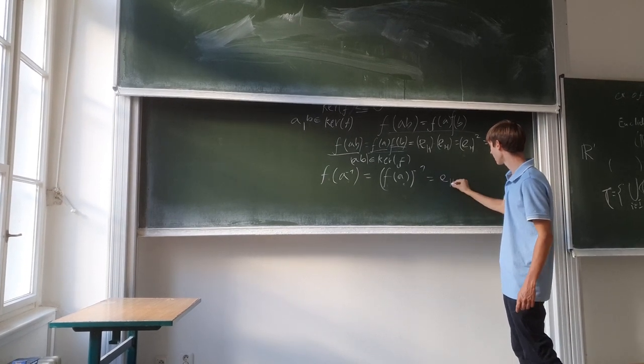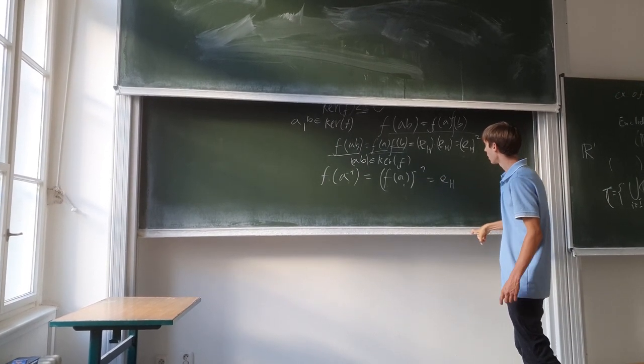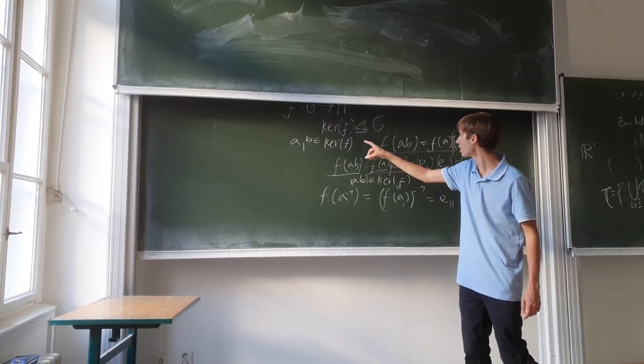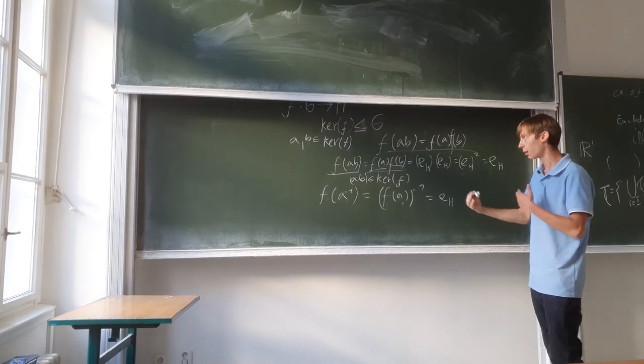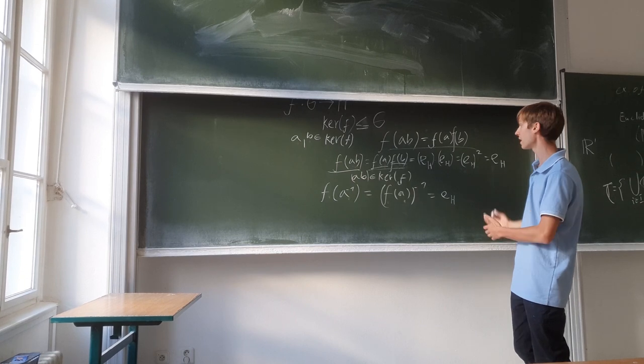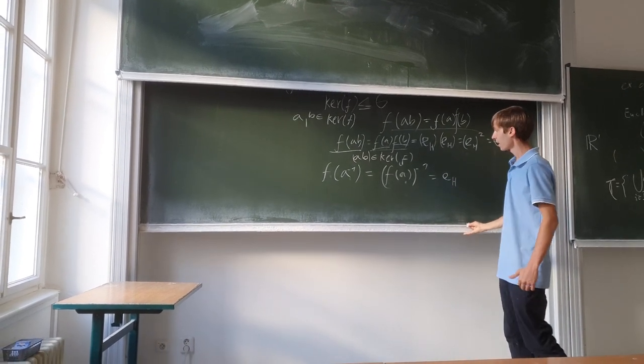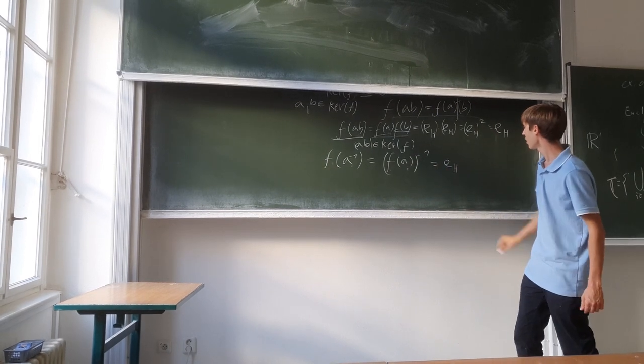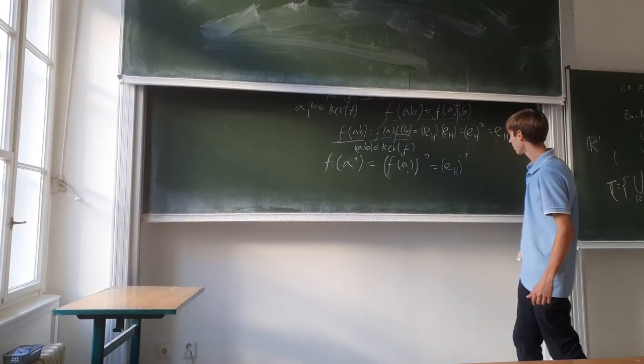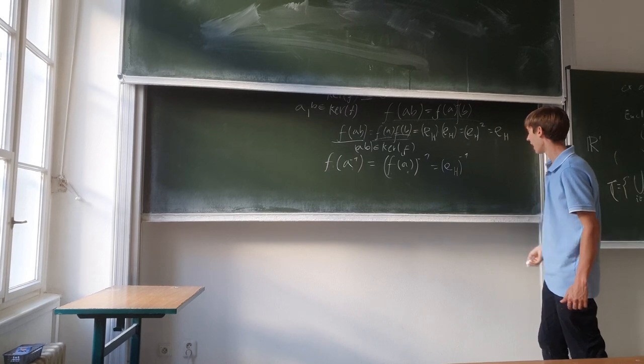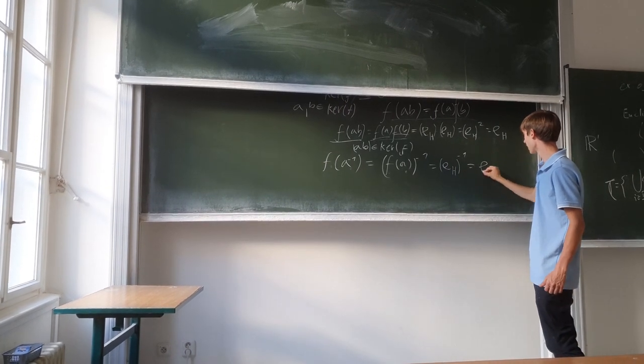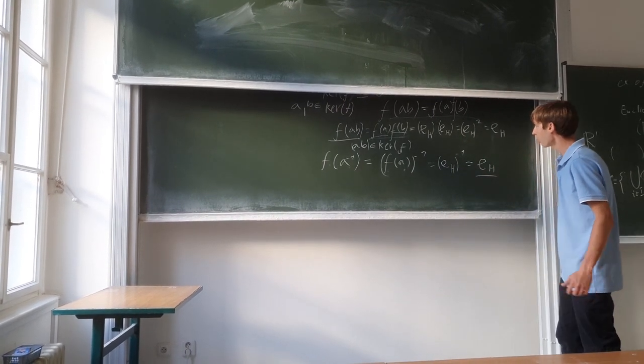The identity element inside H - we've shown that because a is in the kernel. We're going back to the definition of what the kernel is, and we know that f(a) = e_h. All that to the minus one, meaning get the inverse - the inverse of identity is again identity.